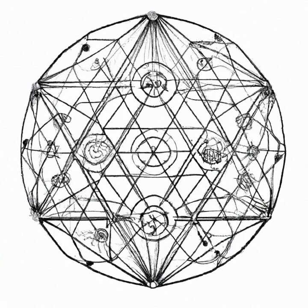The dodecahedron has also been used in the creation of the Metatron's cube, a geometric pattern that's often associated with spiritual and metaphysical concepts. This pattern is created by connecting the centers of each of the 12 pentagonal faces of the dodecahedron, and it's often used as a symbol of unity and interconnectedness.